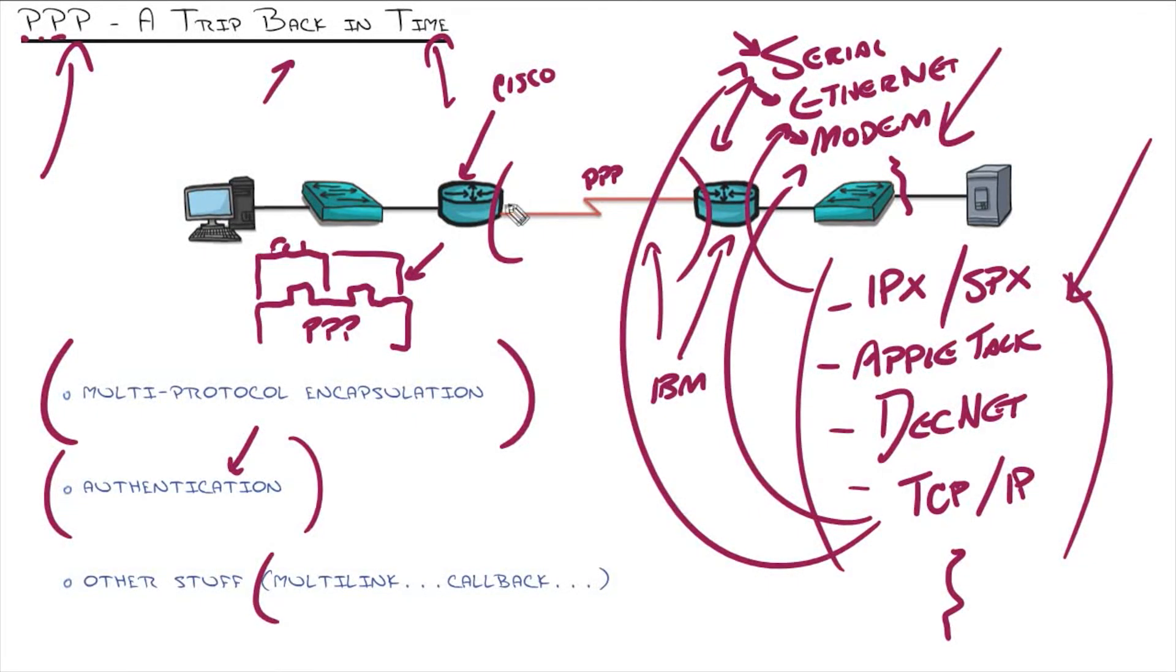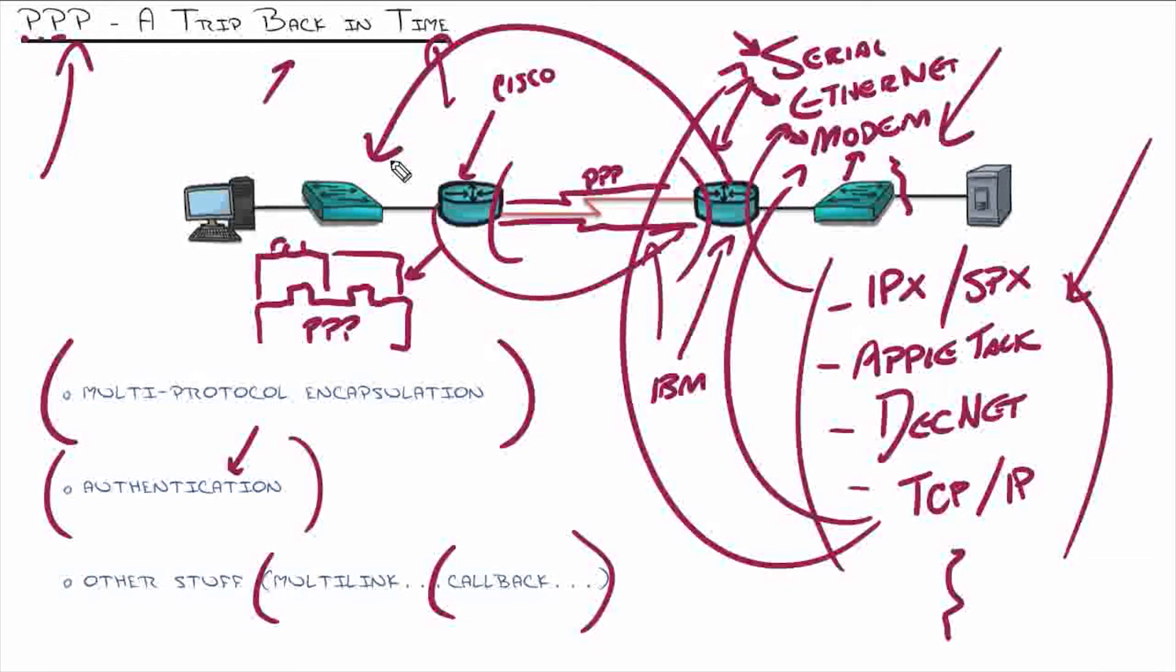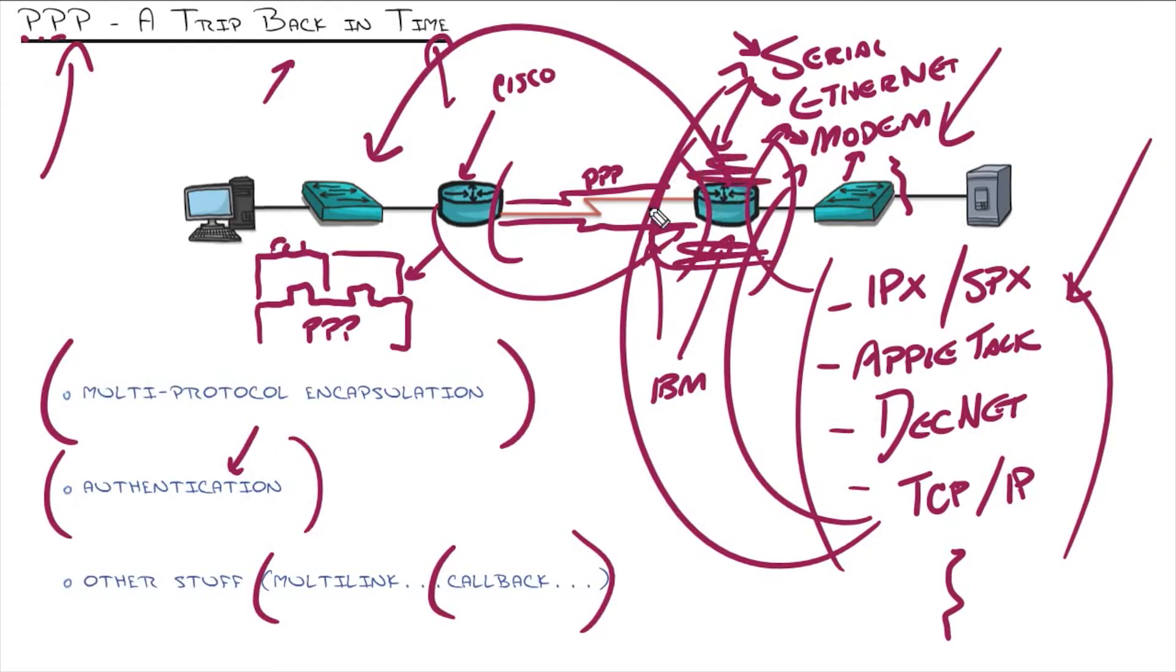Other features were like multi-link. If you had multiple connections, it could bundle them into a single link. Callback. Remember, this is the age of modems where you could dial in from your house and the system would automatically call you back. It's an added layer of security because it would call you back at a predefined number based on your user credentials. Or you might just want to consolidate long distance, because that was a big deal back then, by having the corporate router make that call.